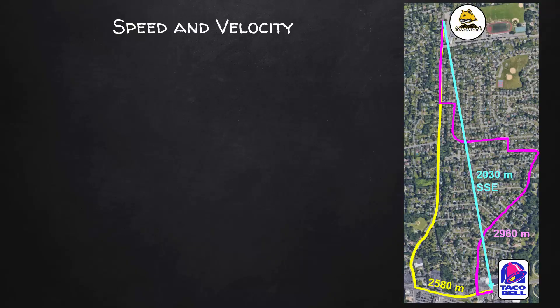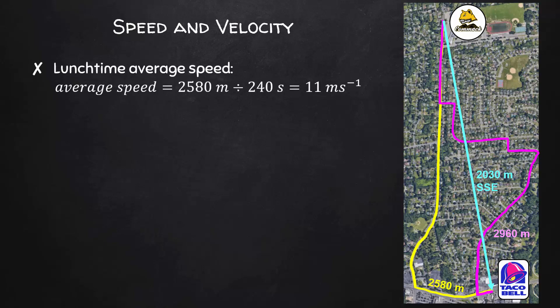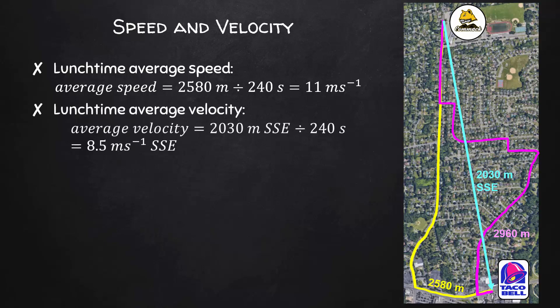Let's calculate my speed and velocity for both a lunchtime trip and an after-school trip to Taco Bell. At lunchtime, I drive a distance of 2,580 meters, and Google Maps says it should take about 4 minutes. That gives me an average speed of 11 meters per second. My displacement is 2,030 meters south-southeast; dividing by 240 seconds gives an average velocity of 8.5 meters per second south-southeast.